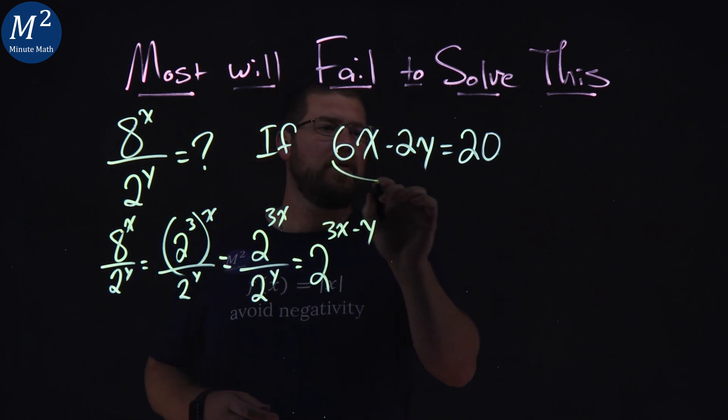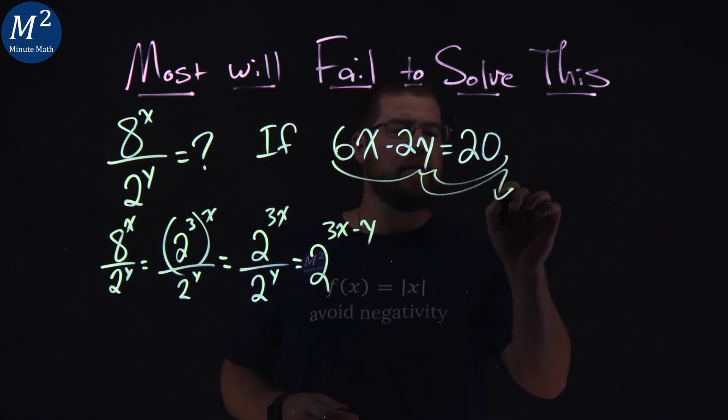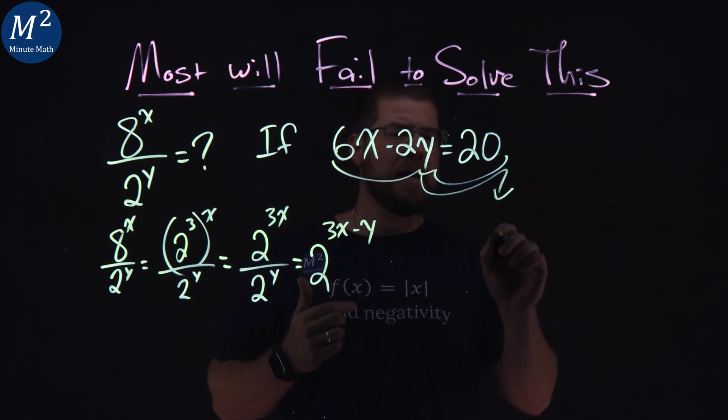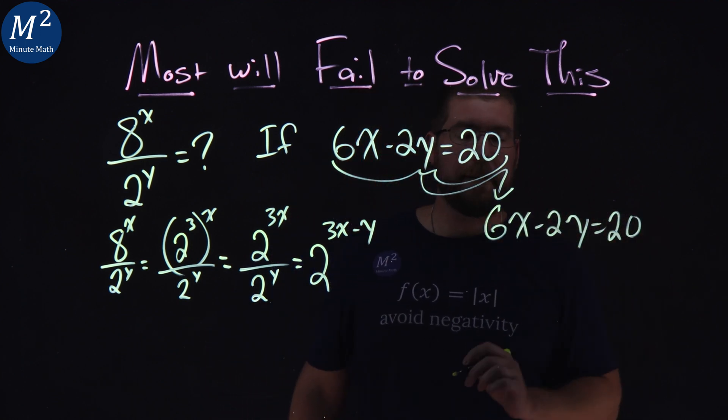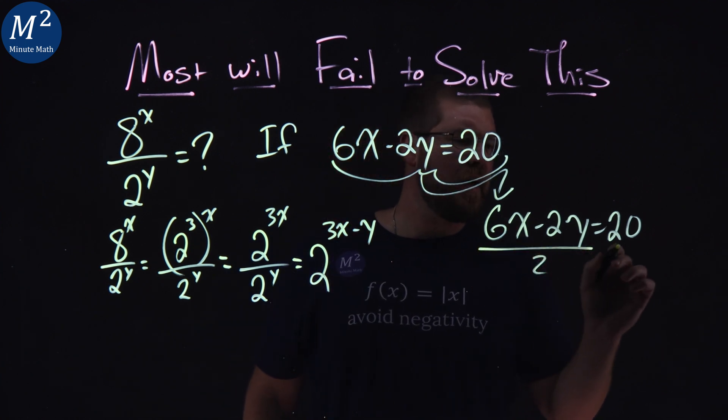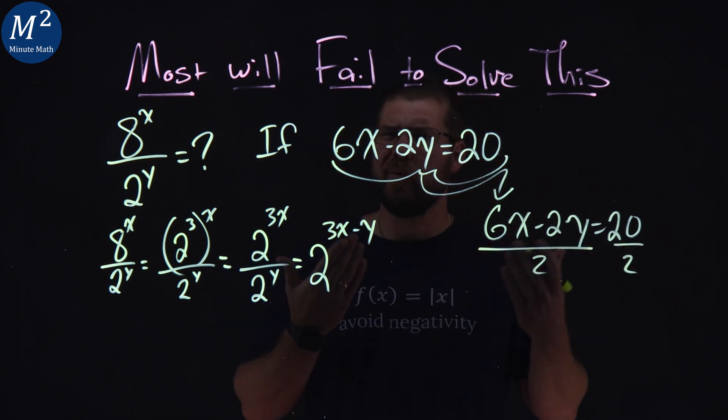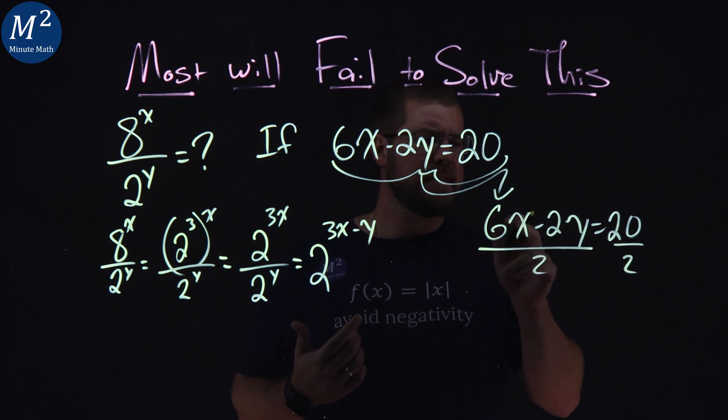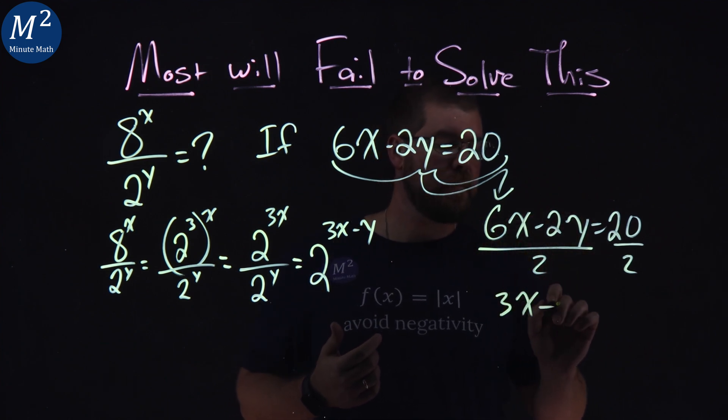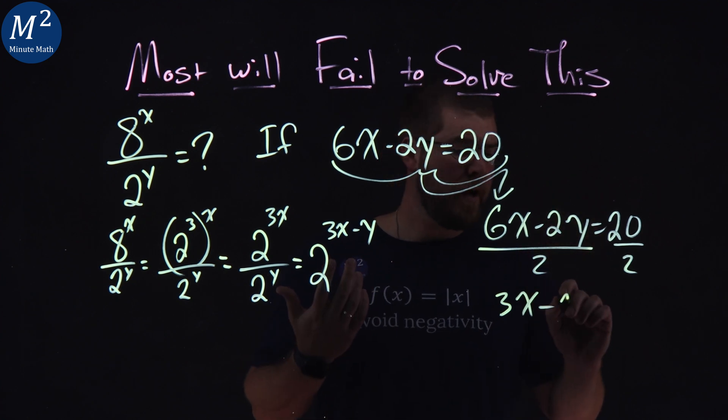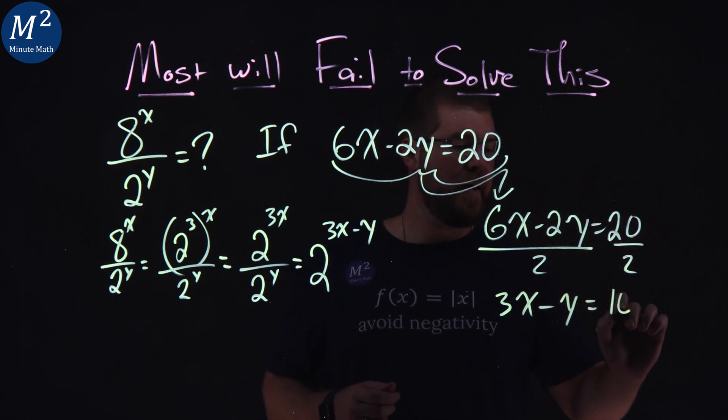All right, now let's go deal with the second part of the equation here. 6x minus 2y equals 20. Well, if I divide both sides by 2, what do I have left? 6x divided by 2 is 3x. 2y divided by 2 is y. And 20 divided by 2 is 10.